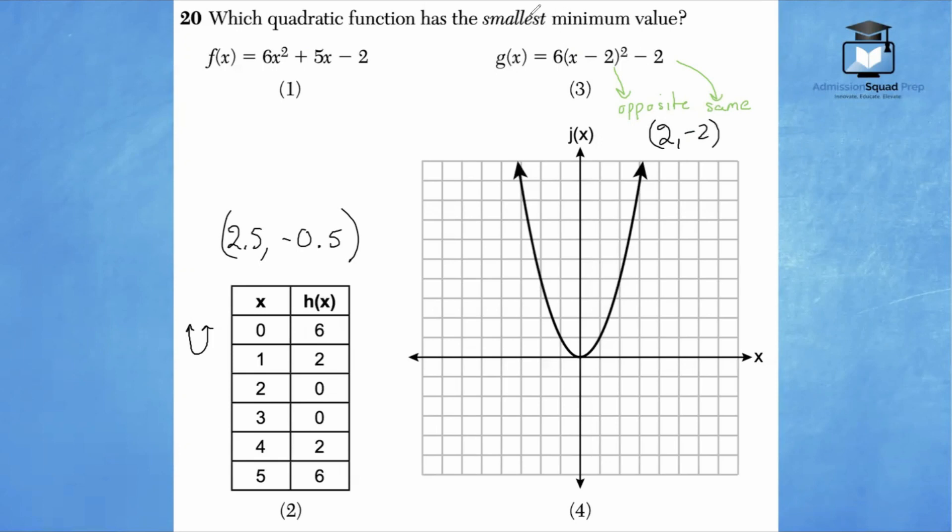So far, if we had to figure out the smallest minimum between negative 0.5 and negative 2, answer choice 3 is winning. For answer choice 4, the vertex or minimum is at 0. So if we had to compare answer choices 2, 3, and 4, the smallest minimum value between negative 0.5, negative 2, and 0 is going to be negative 2.